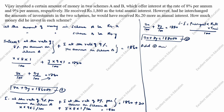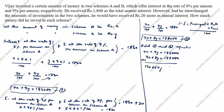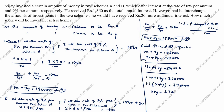Adding equation 1 and equation 2: 8X + 9Y = 186000 plus 9X + 8Y = 188000 gives 17X + 17Y = 374000. Taking 17 outside: X + Y = 374000 / 17 = 22000. So X + Y = 22000. This is the third equation.